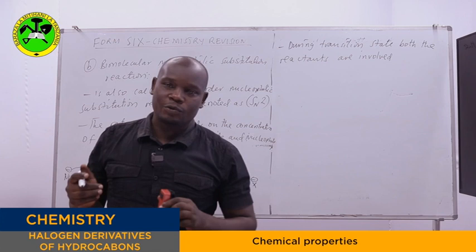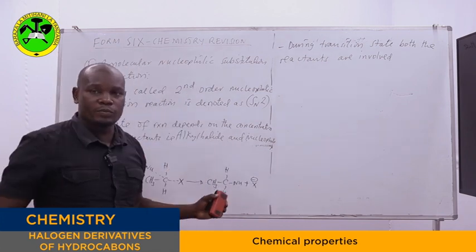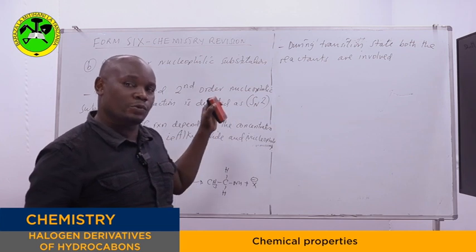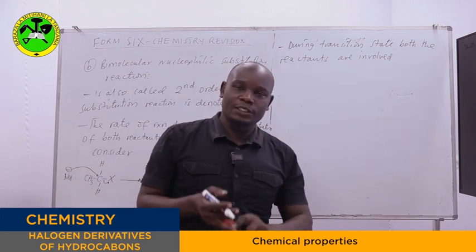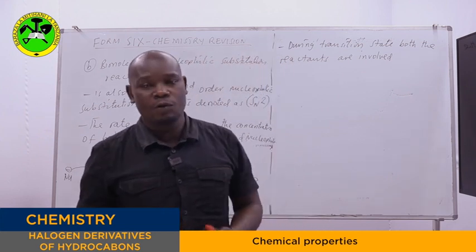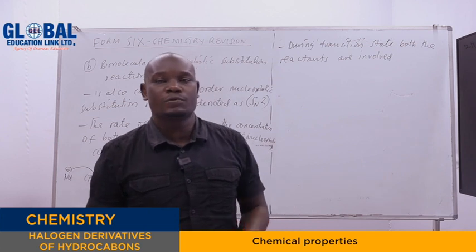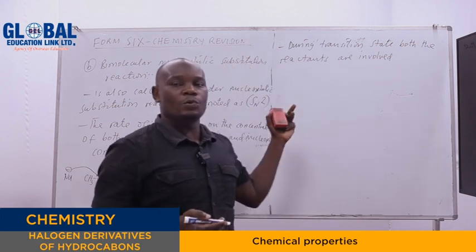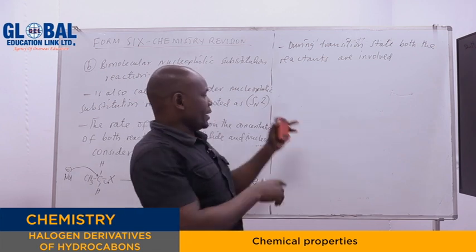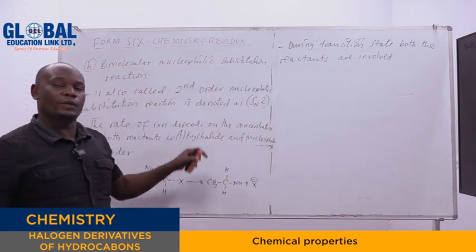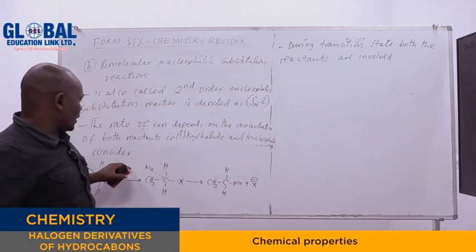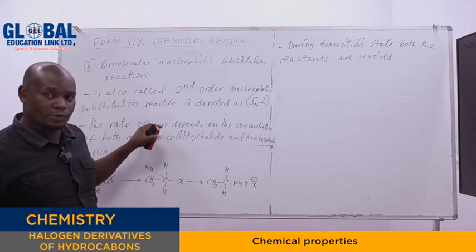During the transition state both reactants are involved — that is why we call it the second order nucleophilic substitution reaction. These are the two mechanisms of nucleophilic substitution reaction in halogen. The typical examples of nucleophilic substitution reactions are: hydrolysis, formation of ester, formation of ether, formation of isocyanide, formation of alkyl cyanide, and formation of nitroalkane. You are watching Darasa Online. The order of reactivity in the bimolecular nucleophilic substitution reaction follows a trend.